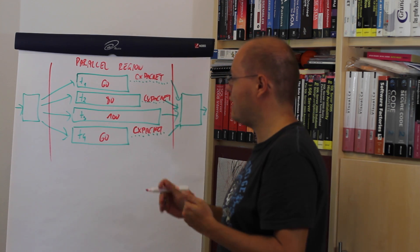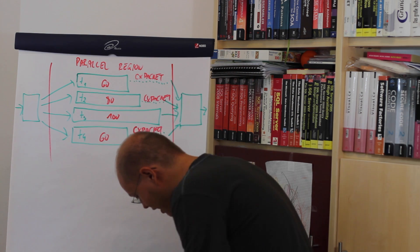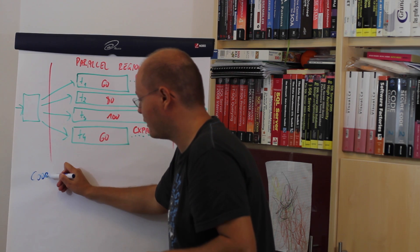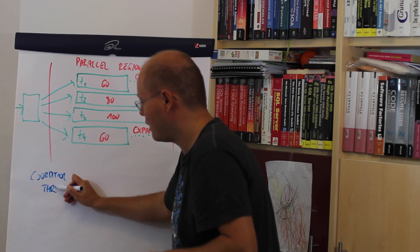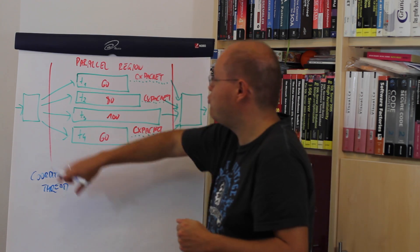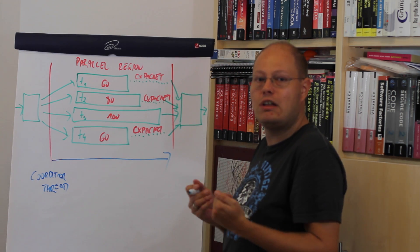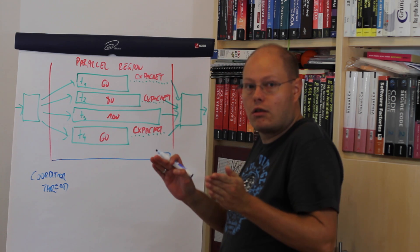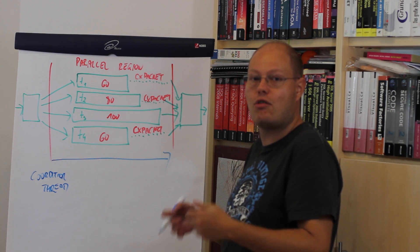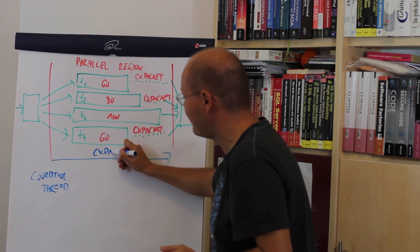These waits simply mean the other threads are waiting on the slowest one, in our case thread 3. And now, very importantly, we also have the so-called coordinator thread in SQL Server — thread 0 in the execution plan. That is the thread that runs the single-threaded region of our execution plan. This means when we have a parallel region in our execution plan, the coordinator thread is doing no work, because it waits until the parallel region is finished. And what is the coordinator thread doing in the meantime? It also produces CX Packet Waits.